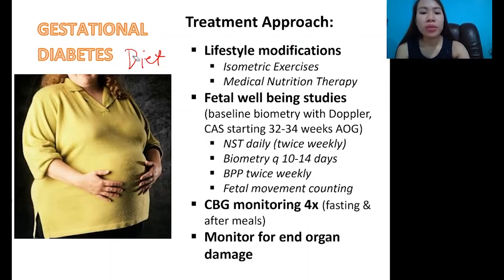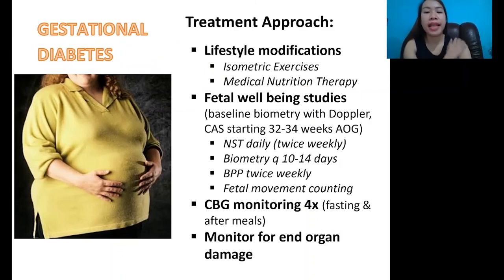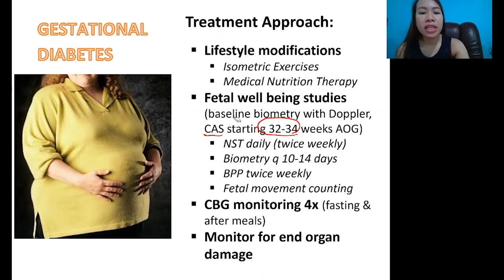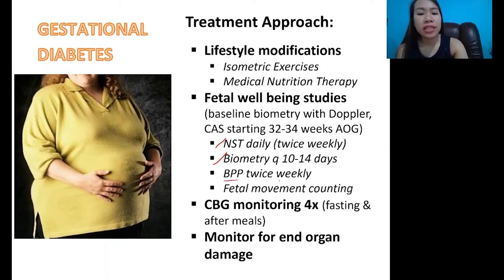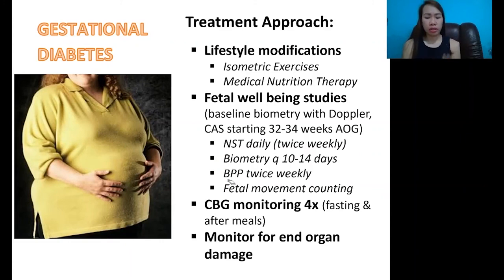Of course, we also have to ensure the fetus is okay, so we perform fetal well-being studies. We have baseline biometry with Doppler and congenital anomaly scan starting at 32 to 34 weeks age of gestation — done via ultrasound to check if the baby is okay. Non-stress test is done daily or twice weekly. Biometry every 10 to 14 days. Biophysical profile is done twice weekly, along with fetal movement counting. With so many complications, we must monitor the mother more frequently.